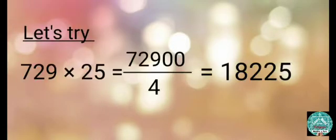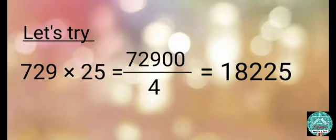Let's try: 729 multiplied by 25. Put two zeros to the right of 729, then divide it by 4. So the answer is 18,225.